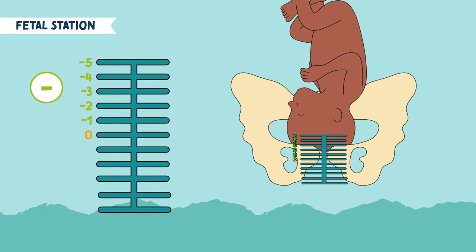Let's talk about fetal station zero a little bit more. What was that landmark called at fetal station zero? The ischial spine — you must remember this in order to understand fetal station. When the baby's presenting part, most commonly the head, is at fetal station zero, aka the ischial spine, we call this the baby is engaged.